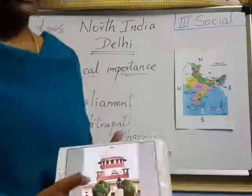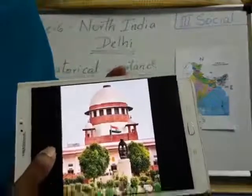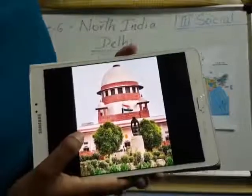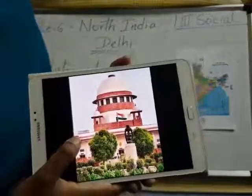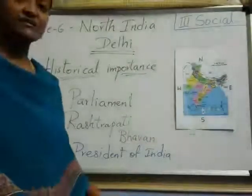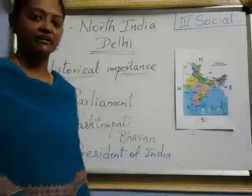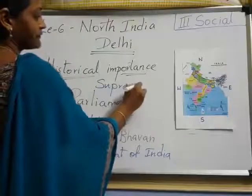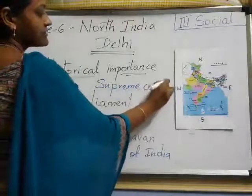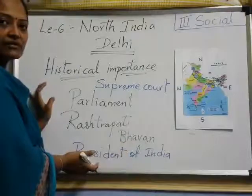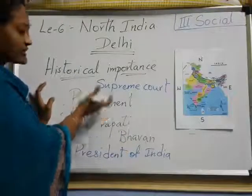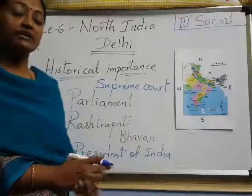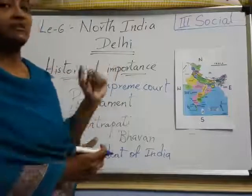Next, another picture — this is a court. What is this? This is a court. We call it as Supreme Court. Supreme Court is the highest court of India. It is also there in Delhi only. So these are all constructed by the Mughals and British people in the ancient times in Delhi.